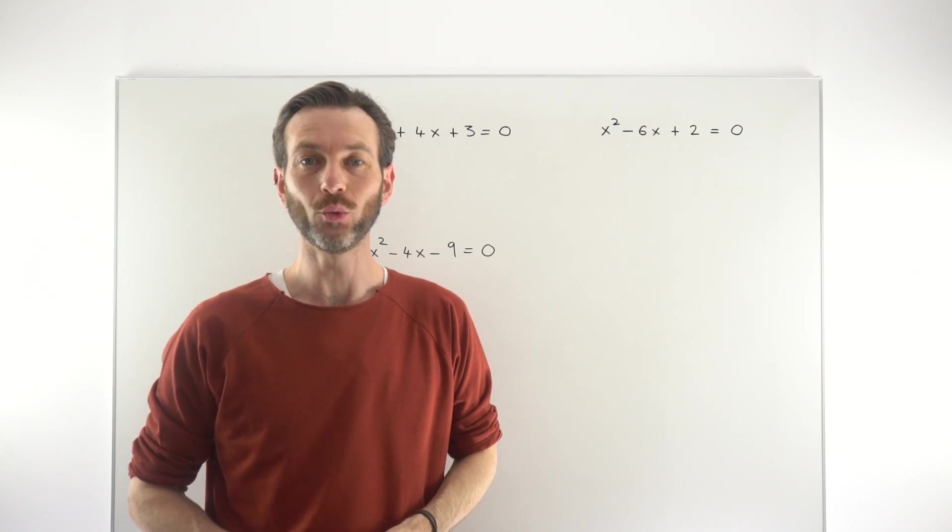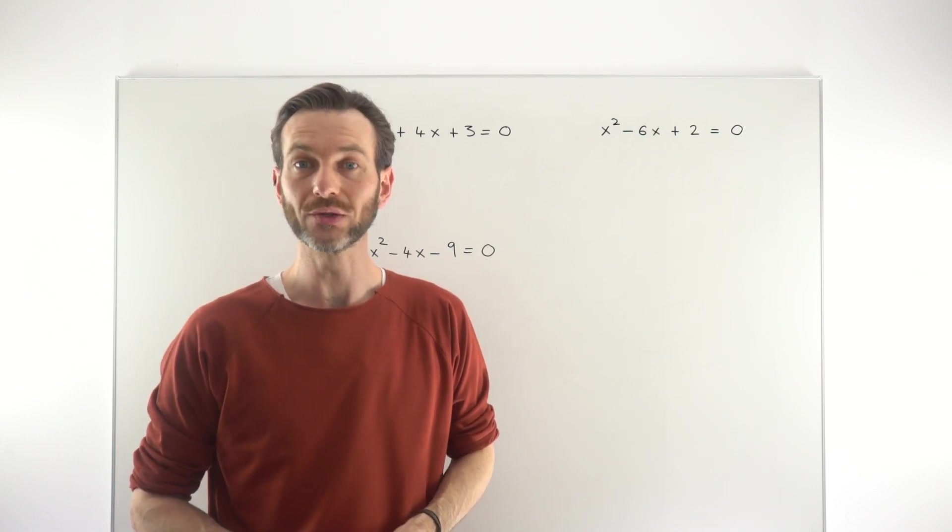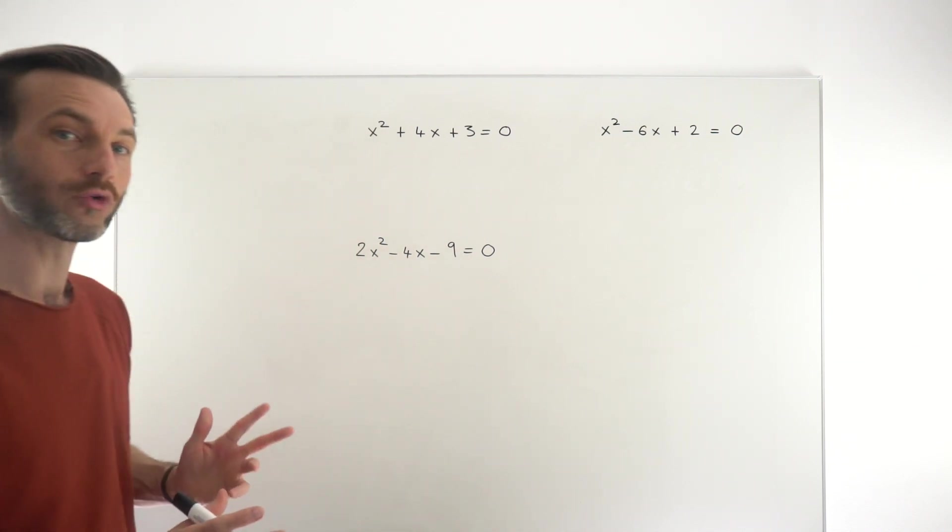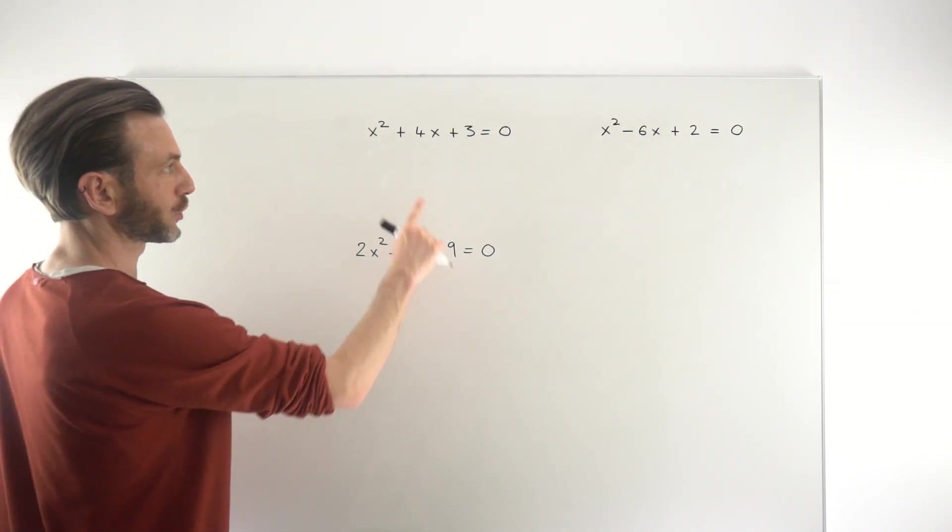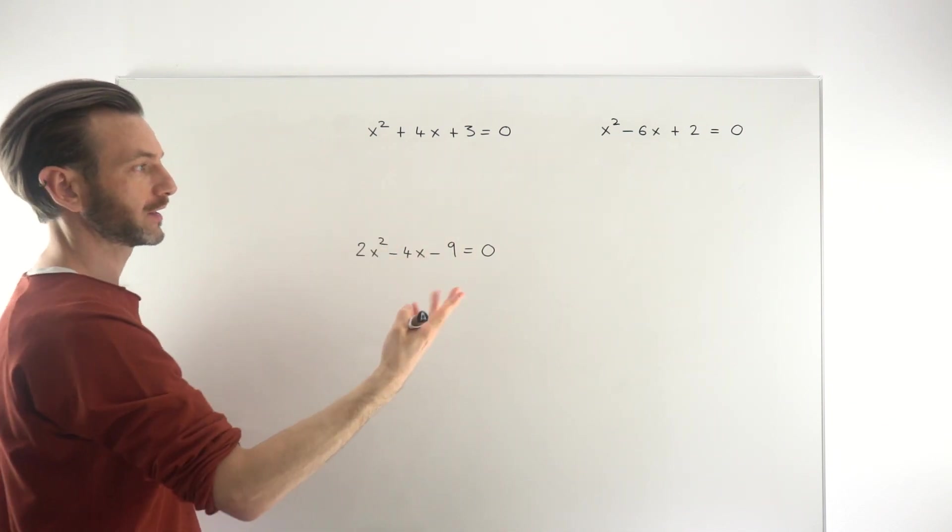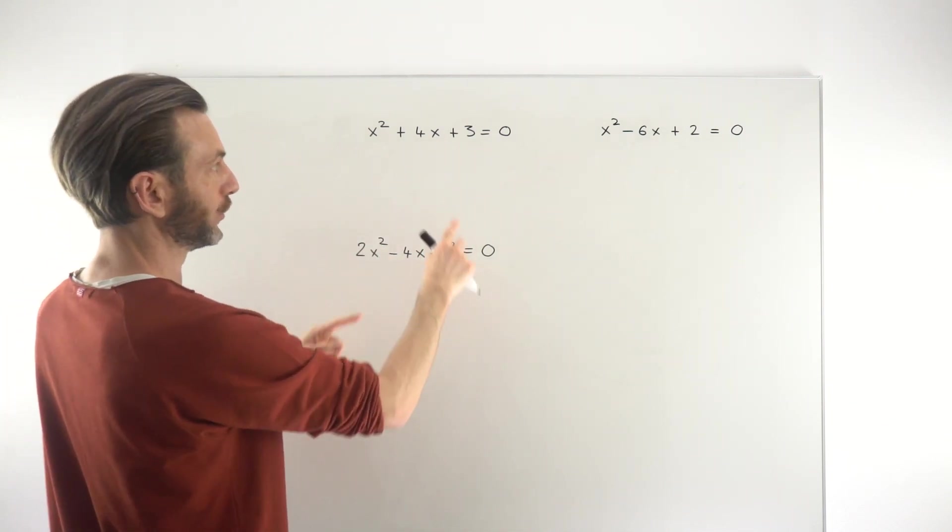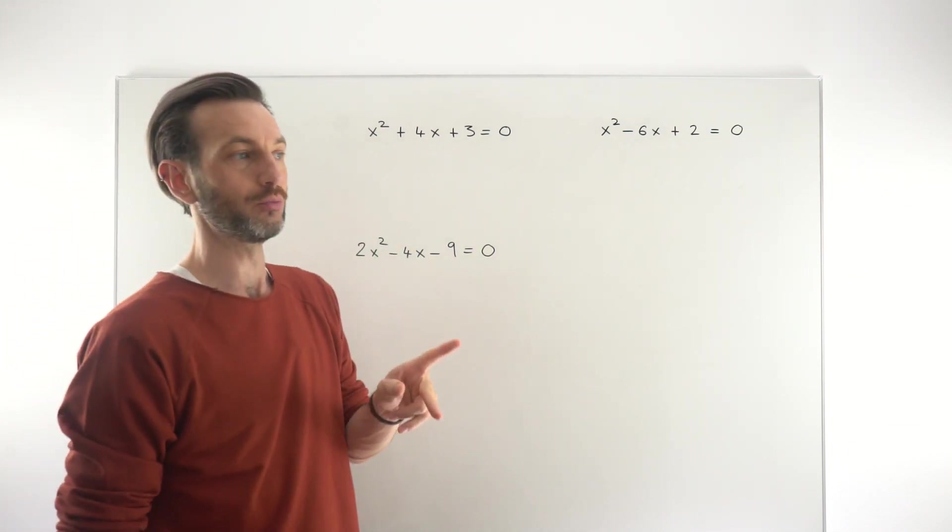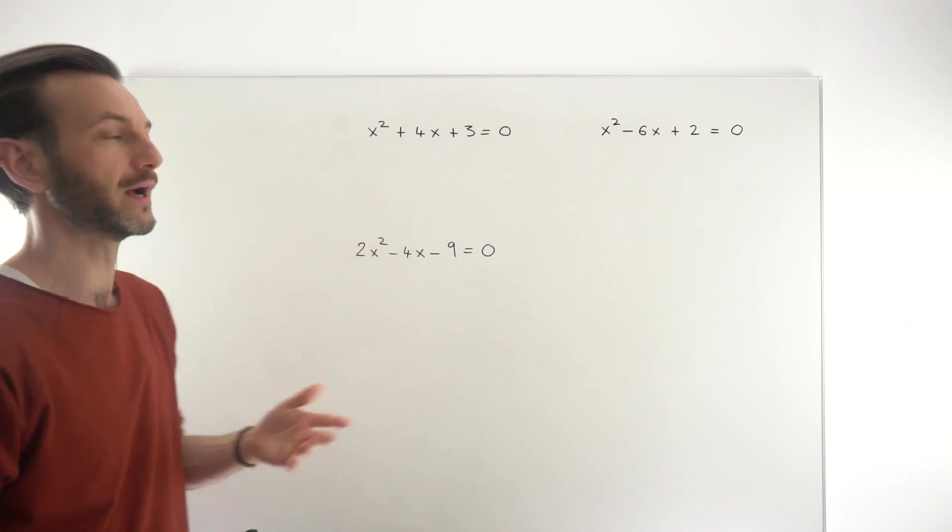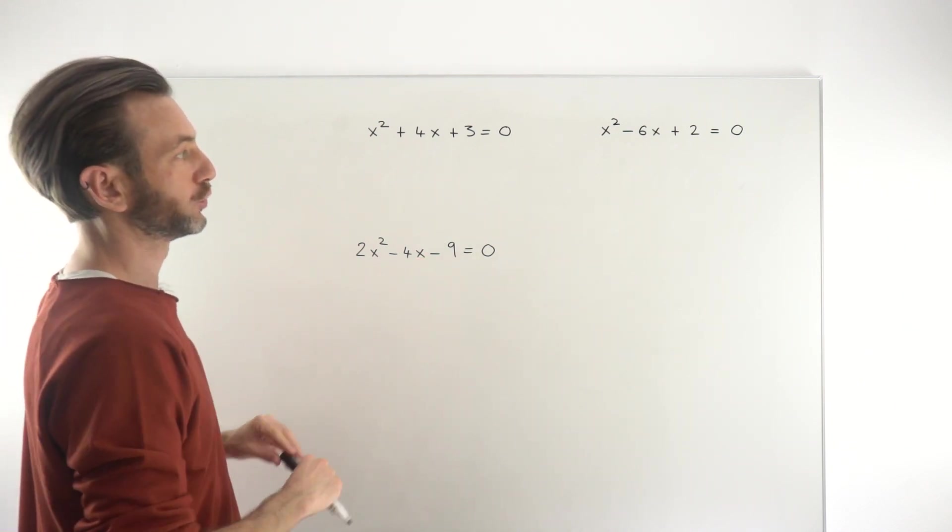In this class we're going to consider how you solve quadratic equations using completed square form. So with quadratic equations you've got two scenarios. Either your quadratic expression will factorize, and it could factorize in different ways depending on what it looks like. So it could be a trinomial which would go into two brackets, or it could be a binomial where you use a common factor, or it could be a difference of two squares.